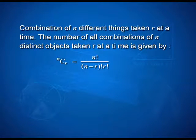There is a simple result which says that the number of all combinations of n distinct objects taking r at a time is given by and denoted by nCr, with the value n factorial by n minus r factorial into r factorial.